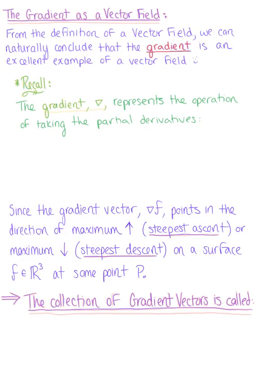From our definition of a vector field, we can naturally conclude that the gradient is an excellent example of a vector field.